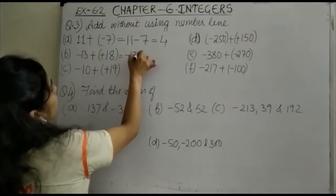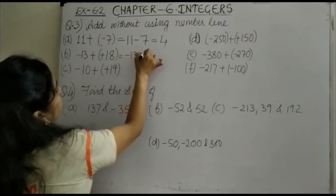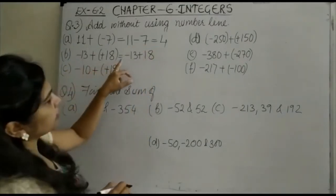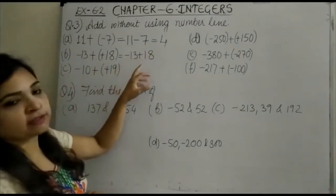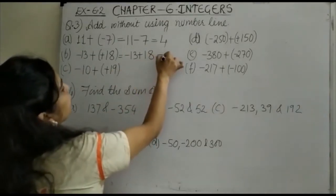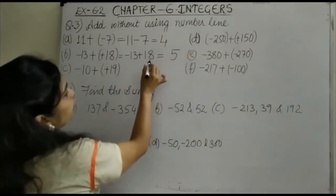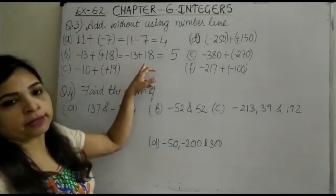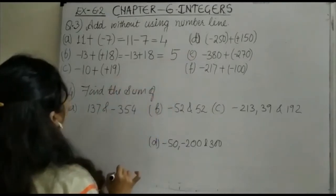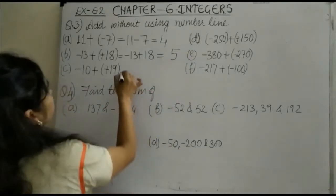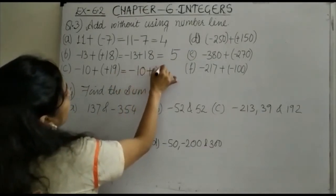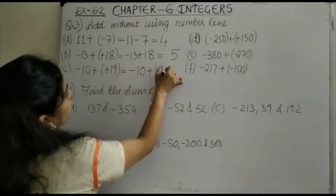The second one is -13 + 18. Since it's minus and plus, you subtract: 18 - 13 gives 5, and the sign is of the bigger number, 18, which is positive, so the answer is +5. In the third one, -10 + 19: once again, plus and minus means you subtract.